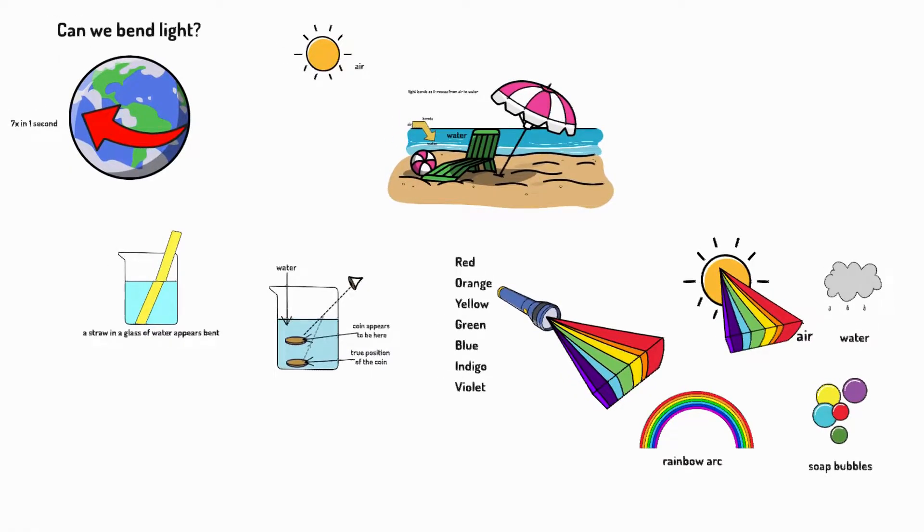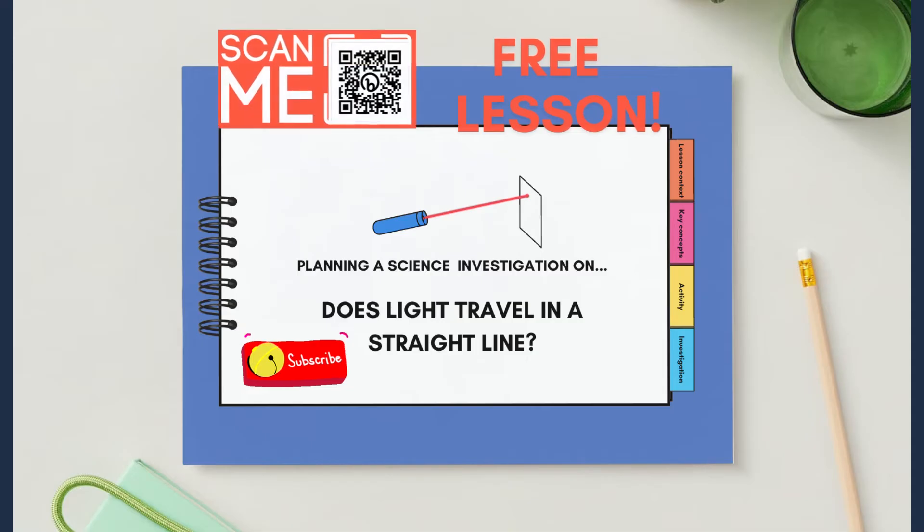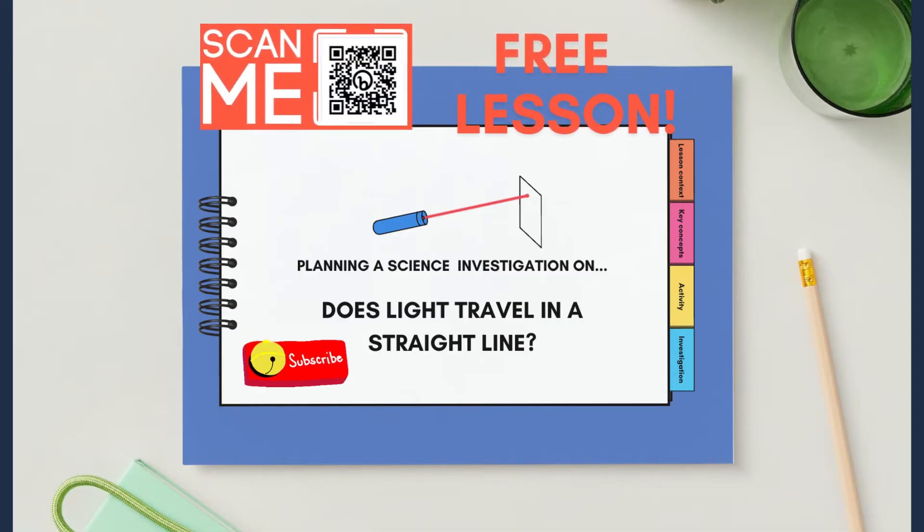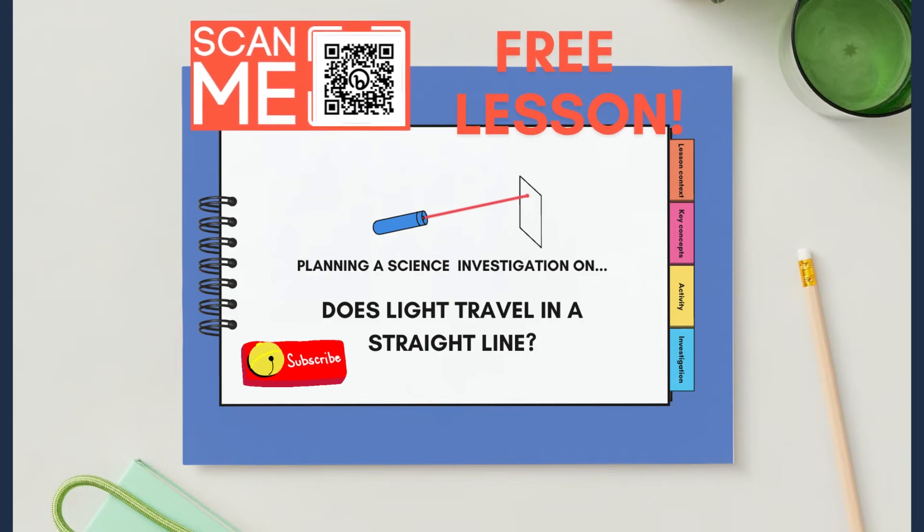So now you know that light can bend and it can change the way we see different objects. Why not check out the free resources for this and other lessons, or enquire about the full curriculum. Link in bio.